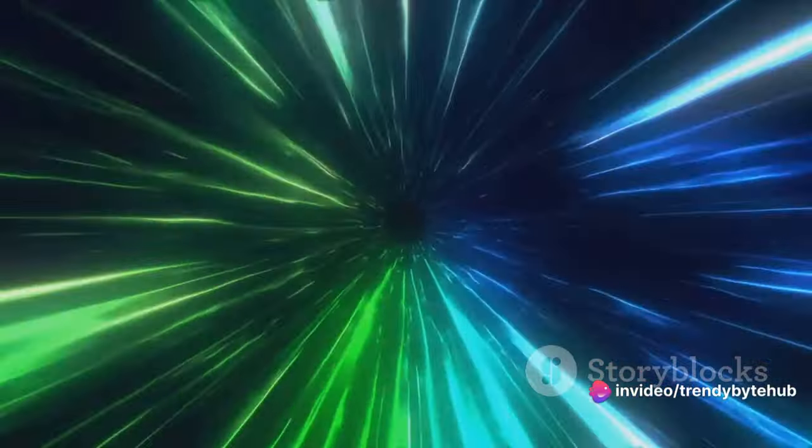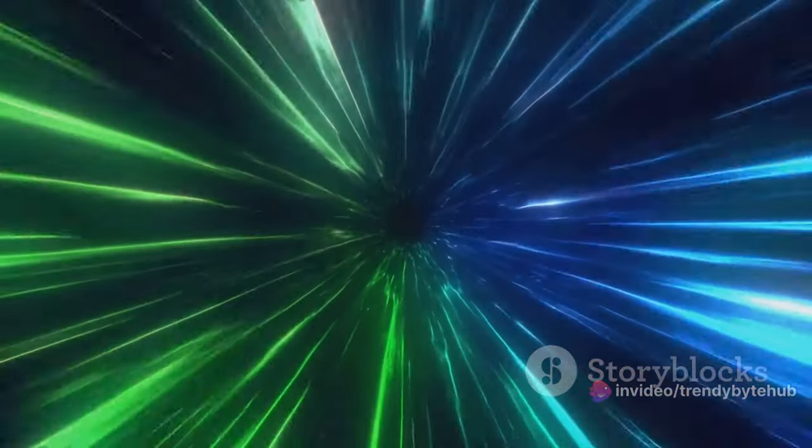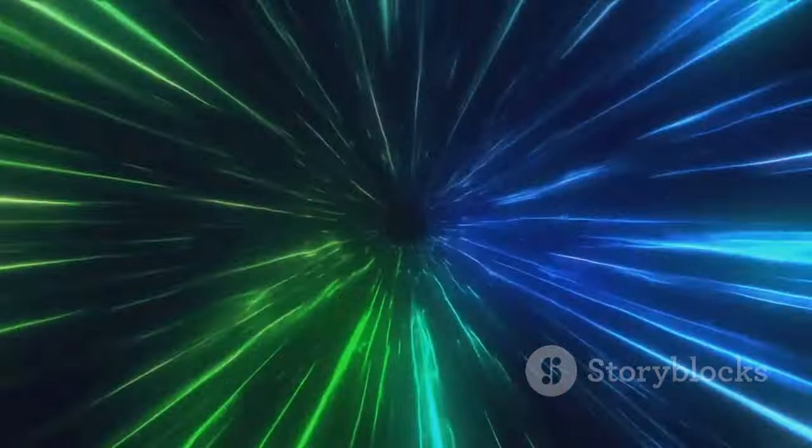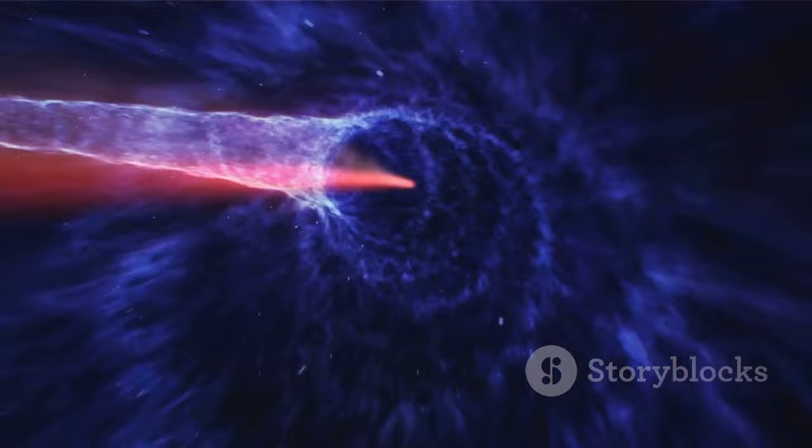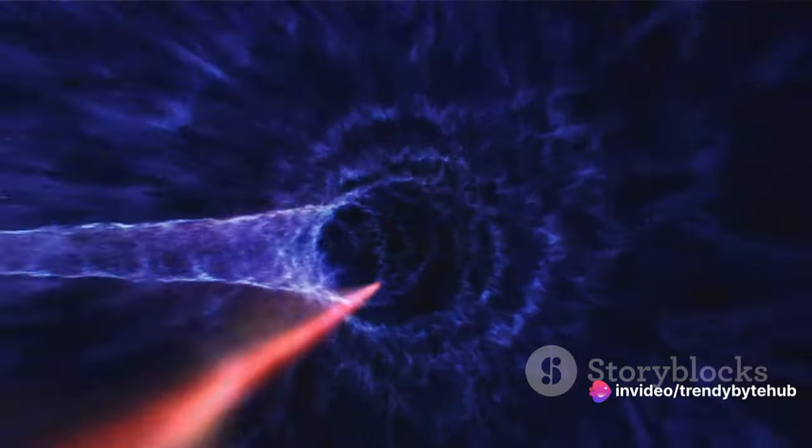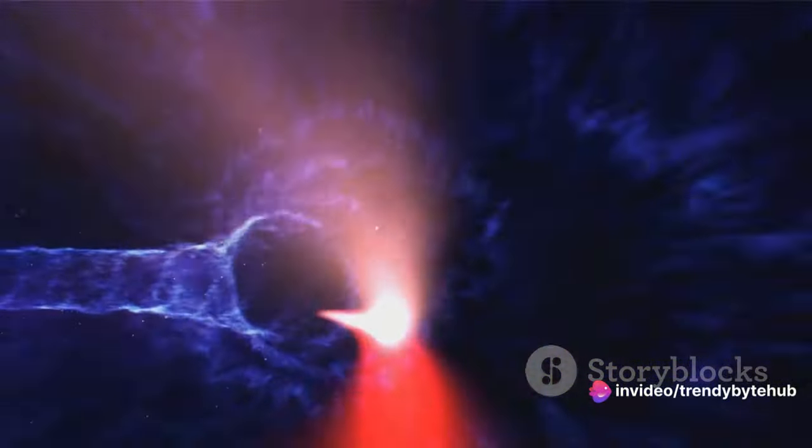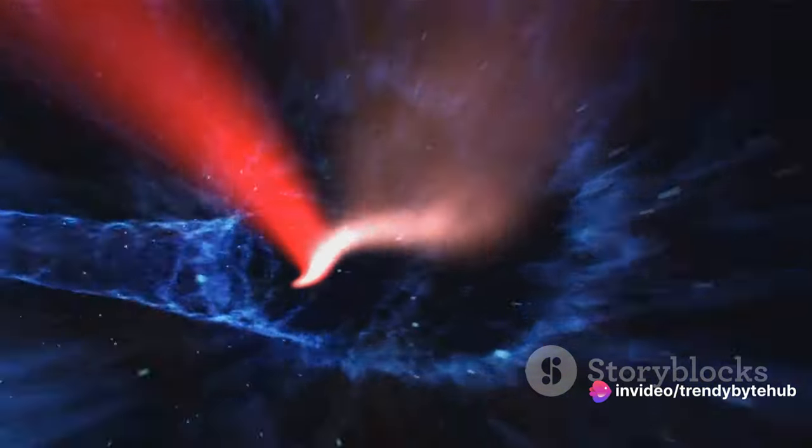Einstein's theory of relativity is a two-part scientific marvel. The first, special relativity, is predicated on the idea that the laws of physics are the same in all inertial frames, and that the speed of light is the same for all observers, no matter their motion or the source of light. This leads to some mind-boggling consequences, one of which is time dilation.